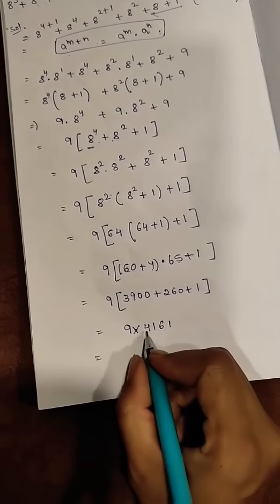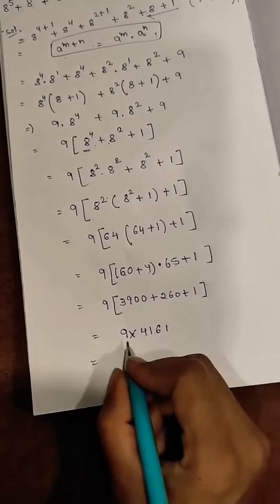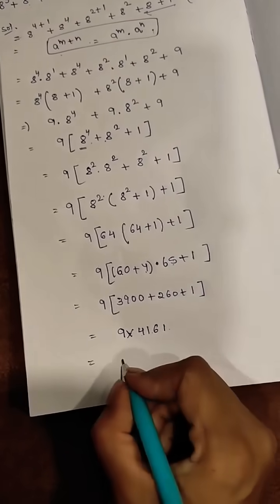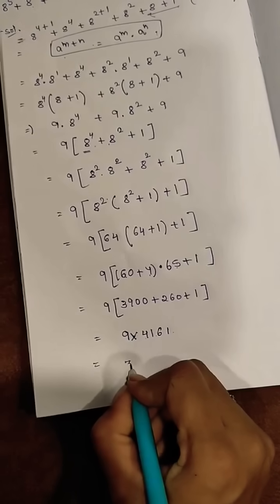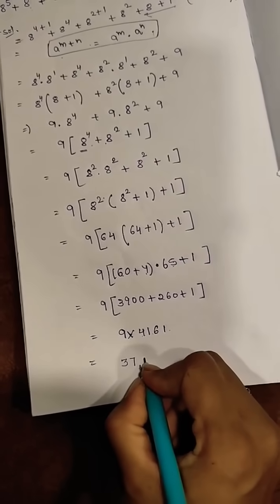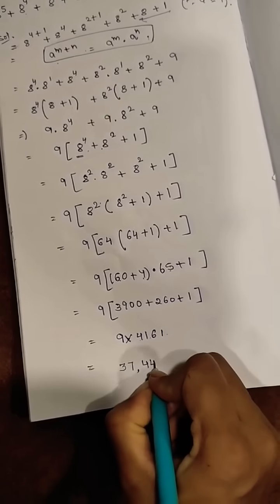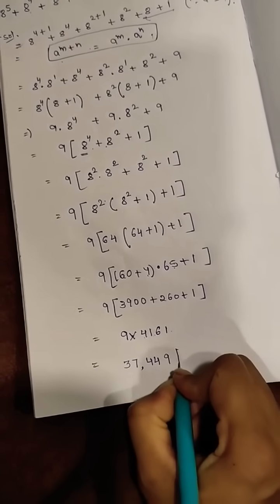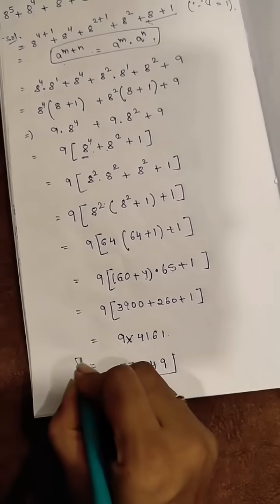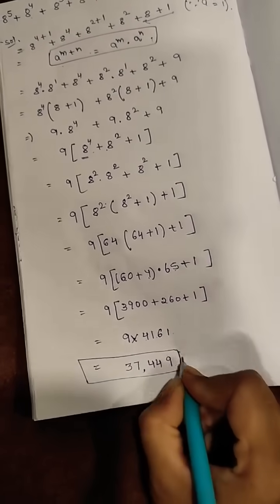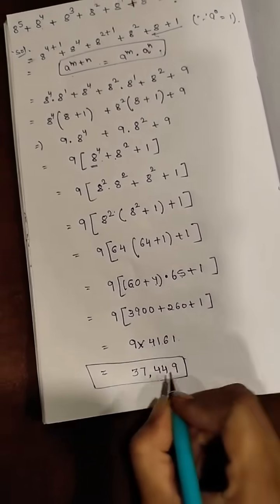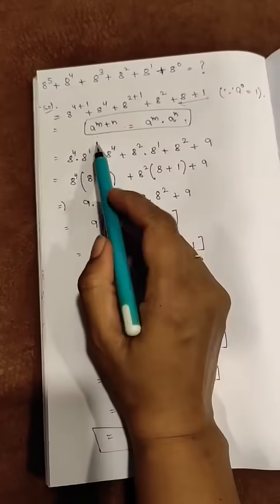So 4161 multiplied by 9 will give you 37449. So this is the final value.